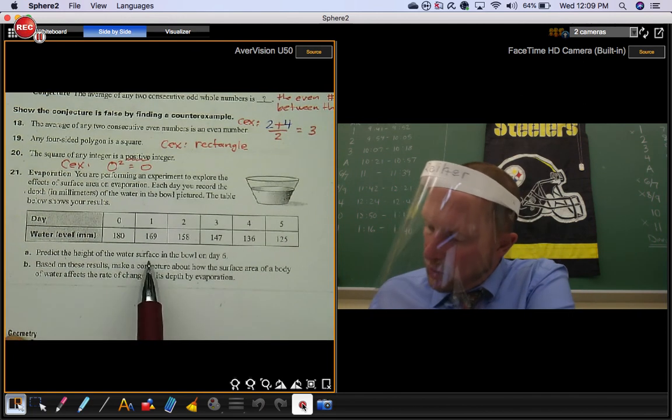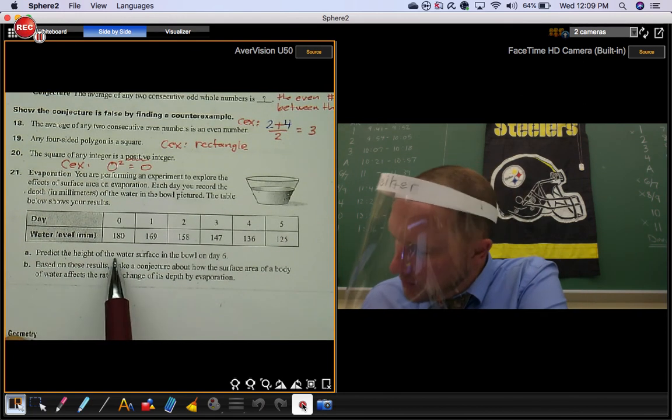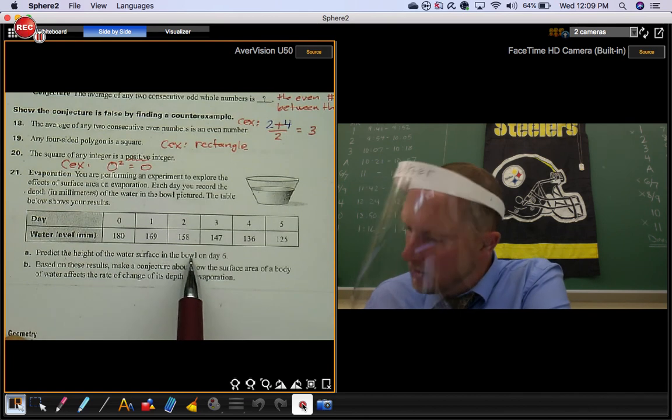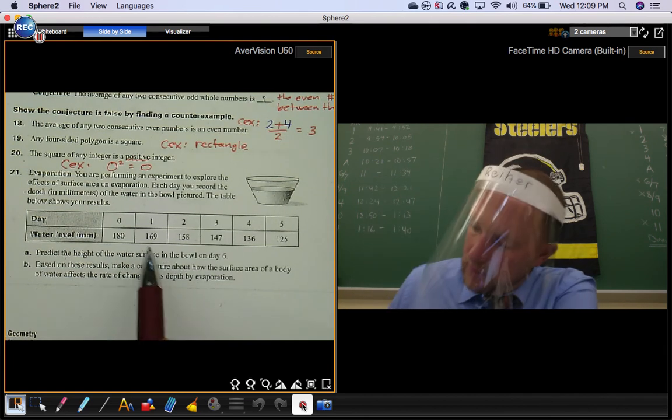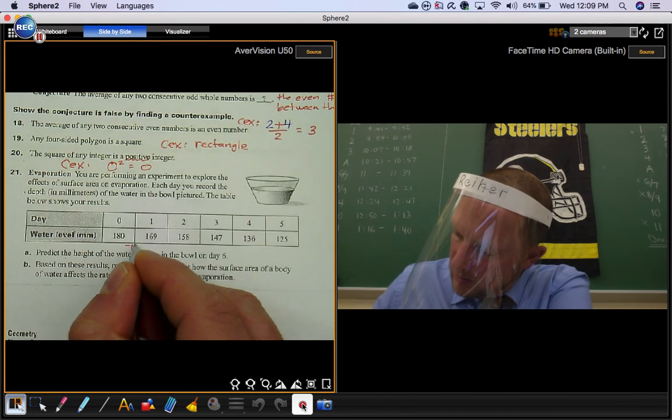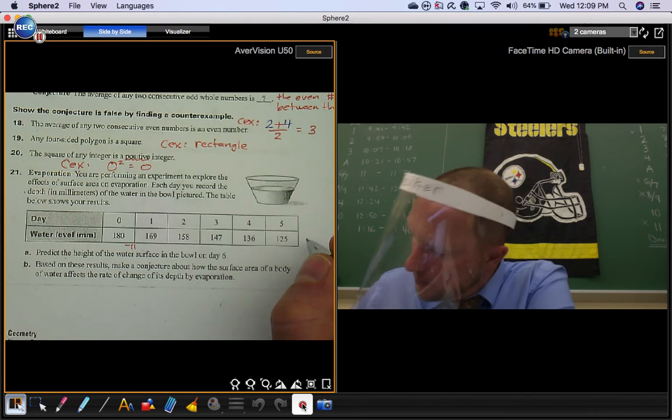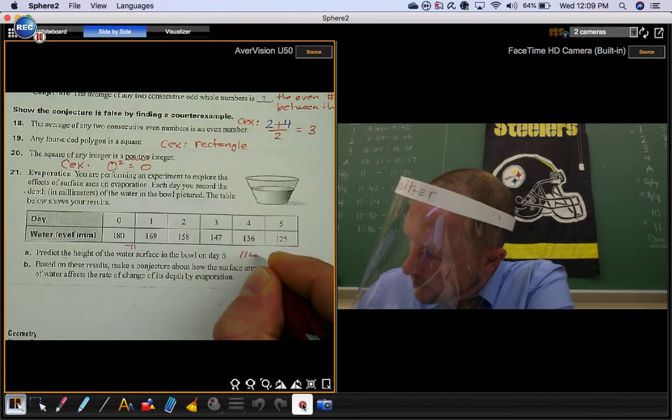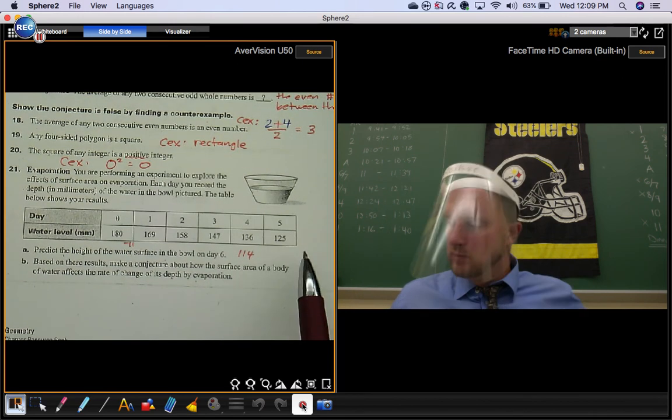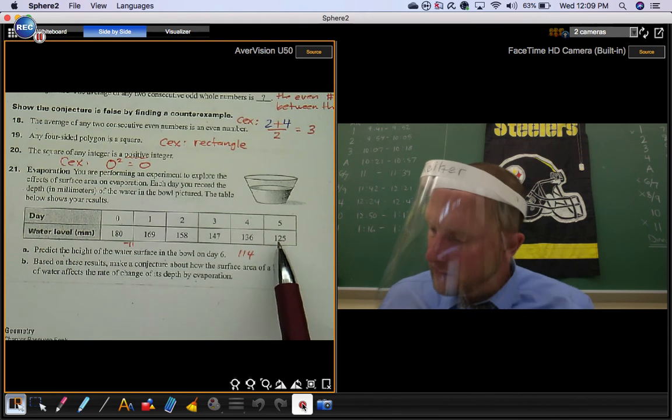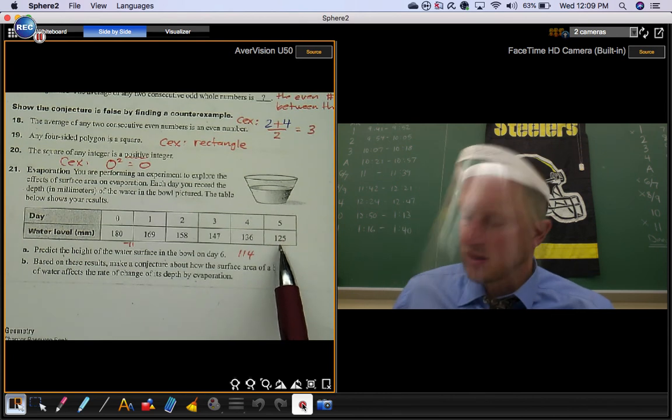Predict the height of the water surface in the bowl on day six. We're dropping by 11 each time. So day five, your water level is 125 millimeters.